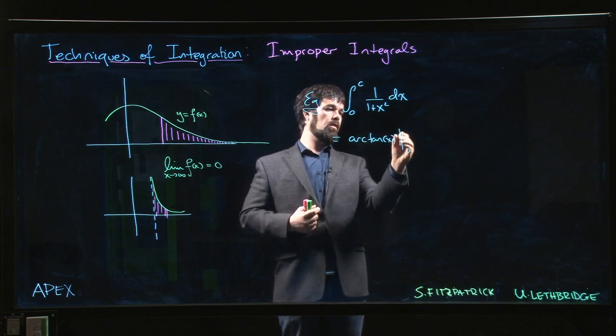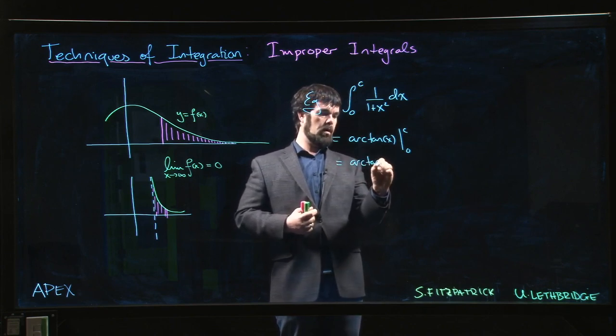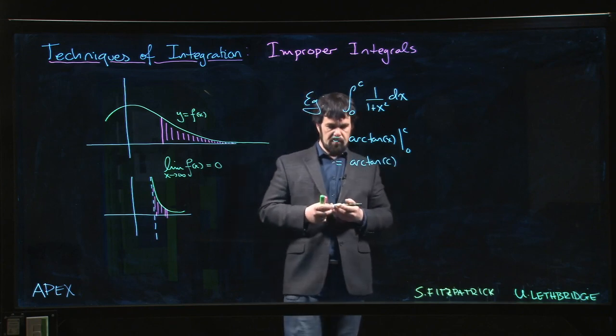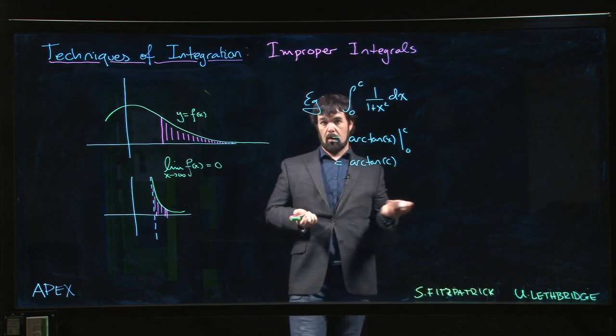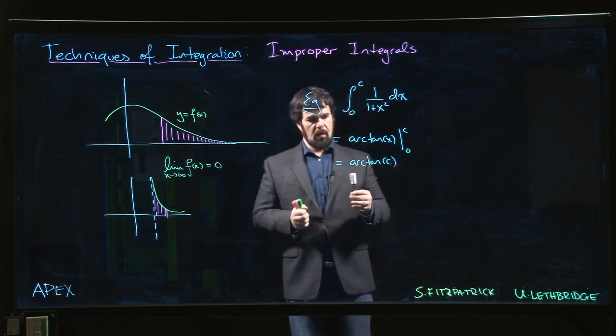We know that this is equal to simply arctan, from 0 to c. Arctan of 0 is 0, so this is arctan of c. So we just get a value: arctan of c.